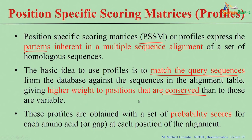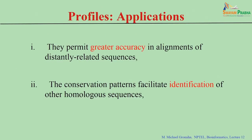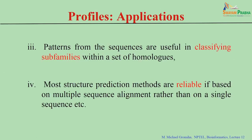These profiles are obtained with a set of probability scores — for each amino acid in a protein, a probability score is assigned for each position during alignment. This gives greater accuracy when aligning distinct related sequences. The conservation patterns also facilitate the identification of homologous sequences, since homologous sequences have high scores.